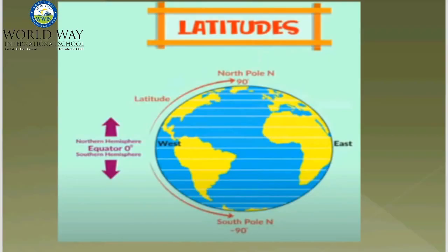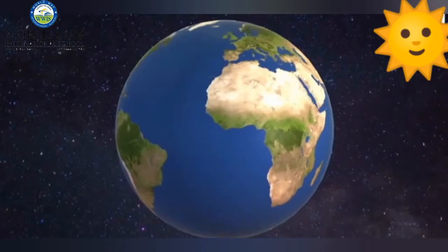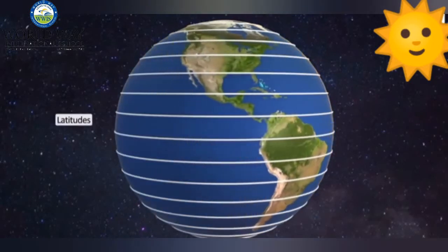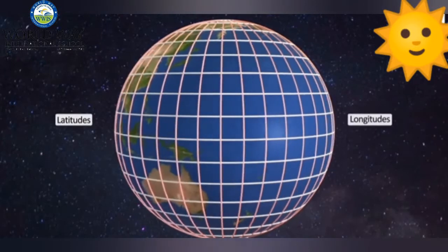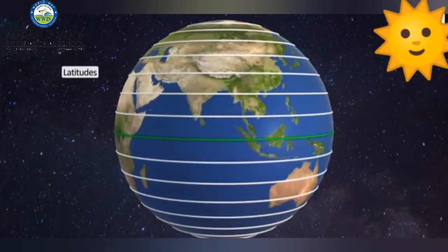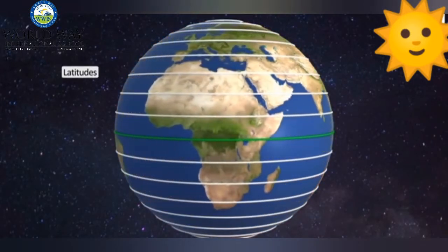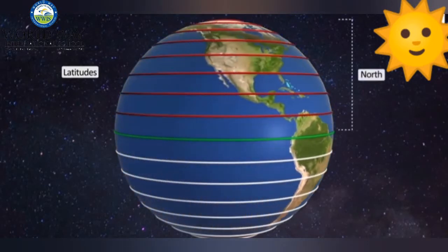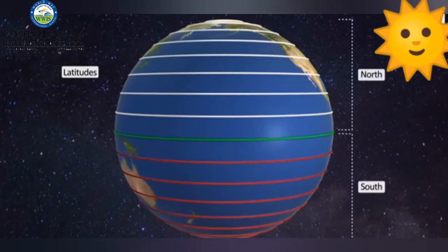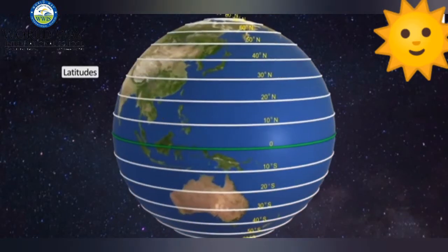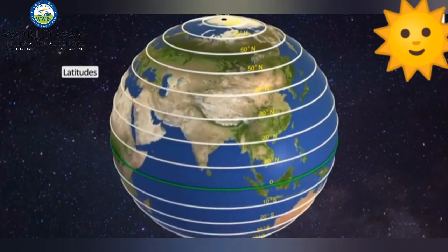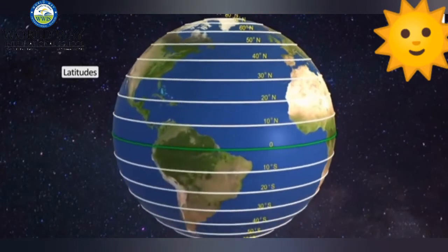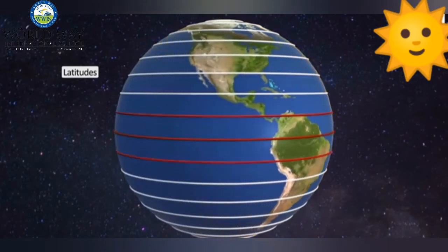The geographical coordinate system is made up of degrees of latitude and longitude. Latitudes are parallels — imaginary lines drawn parallel to the equator towards both the north and the south direction. They are measured from 0 degrees to 90 degrees in both hemispheres.